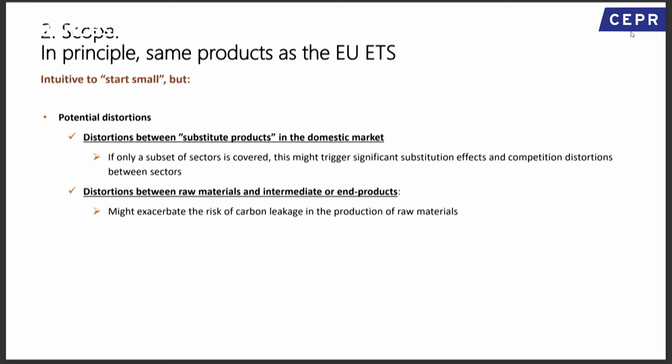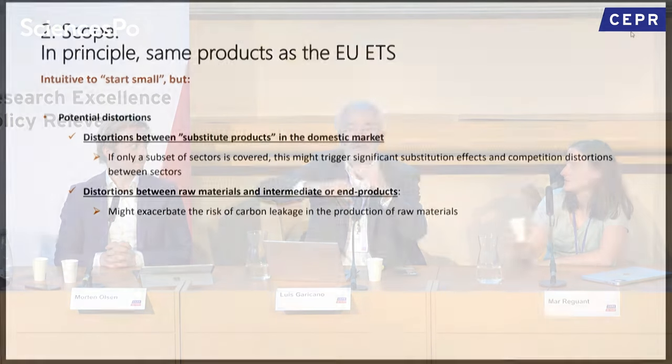The big remaining issue is scope. Are you going to cover all products inside the ETS? If you only charge a little, substitution happens everywhere — vertically, you start making cars with aluminum produced elsewhere because the aluminum pays but the car doesn't. Horizontally, instead of using aluminum or cement, you use something untaxed. The final legislation covers cement, iron, steel, aluminum, fertilizers, electricity, and hydrogen. As an economist, I would ideally want a broad, flat system covering direct and indirect emissions equally — but that's very, very hard.